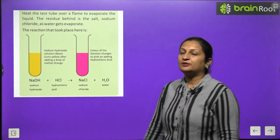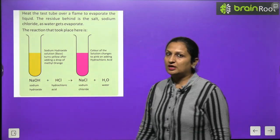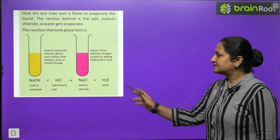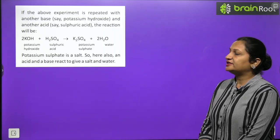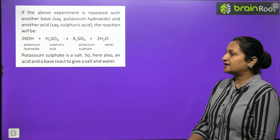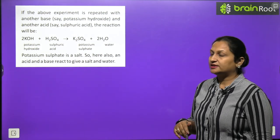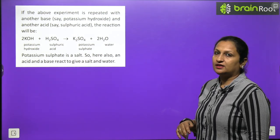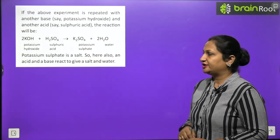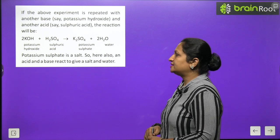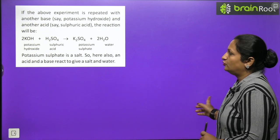Now, activity: Take about 10 ml of dilute sodium hydroxide solution in a test tube. Add a drop of methyl orange to it. The solution will turn yellow because base with methyl orange liberates yellow color. Using a dropper, add dilute hydrochloric acid to the test tube drop by drop while stirring. A stage is reached when an additional drop of acid turns the color from yellow to pink. This indicates sodium hydroxide has reacted with the acid and the solution contains a little amount of acid. Touch the test tube immediately after the reaction. Is it warm? It will be warm because heat is also liberated. Heat the test tube to evaporate liquid. The residue behind is a salt, sodium chloride, as water gets evaporated.